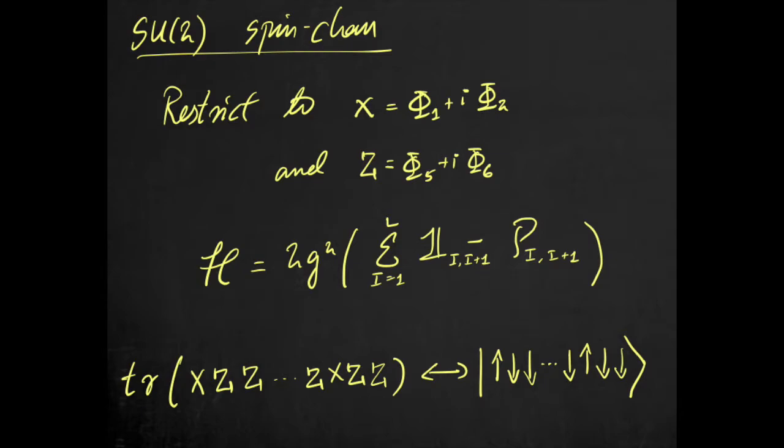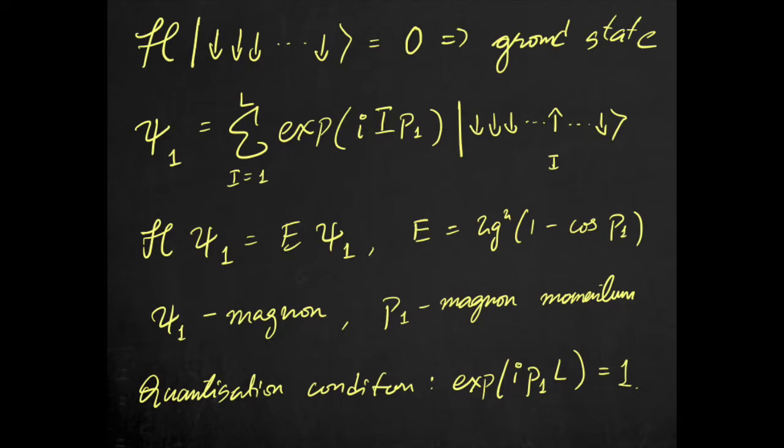To build a ground state, we observe that in acting with the Hamiltonian on a state with all spins down, both the identity and permutation operators behave in the exact same way and thus cancel, giving us a state with zero energy. Then, to construct eigenstates, one builds states with magnons, which can be thought of as spin-ups propagating through the chain with some momentum. One should remember to impose the quantization condition that taking a magnon all the way around the chain is nothing but acting with the identity.